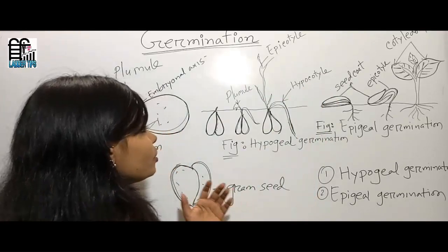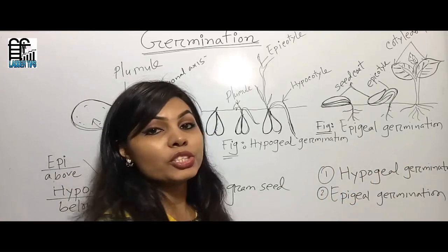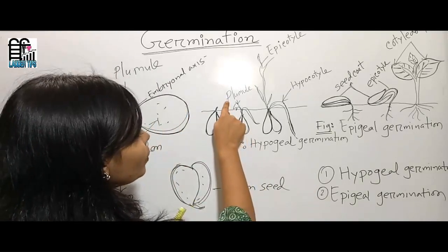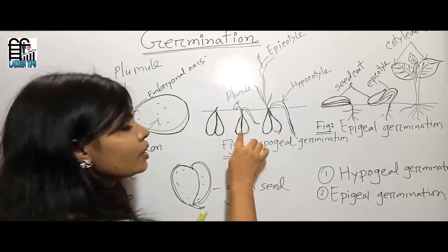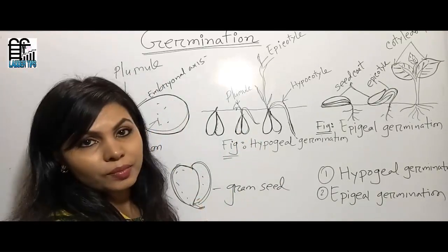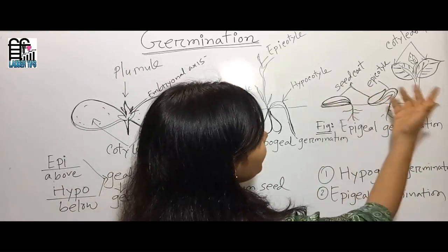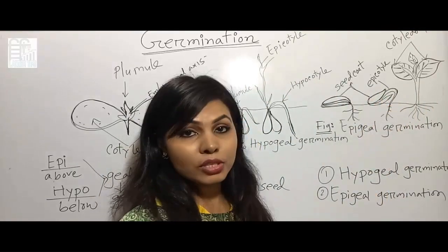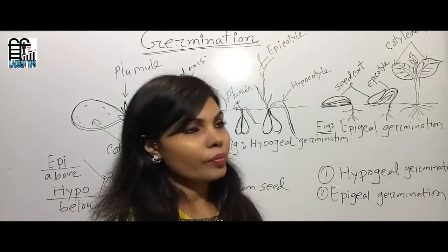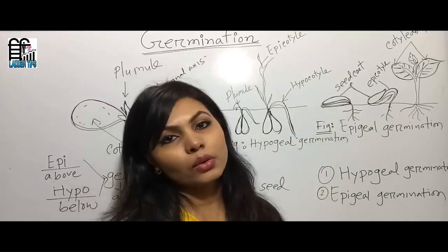I have drawn two figures here — one for hypogeal germination and one for epigeal germination. In hypogeal germination, the plumule comes out of the soil, leaving the cotyledons underground. In epigeal germination, both the plumule and the cotyledons come out of the soil. You can also see the seed coat labeled here — the outer covering that protects the seed.